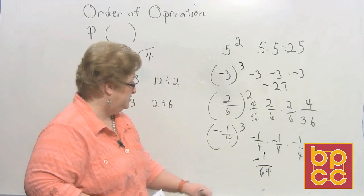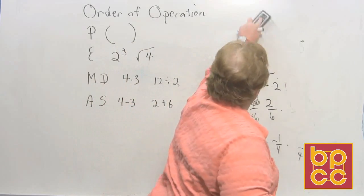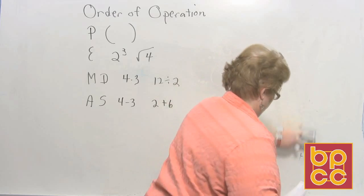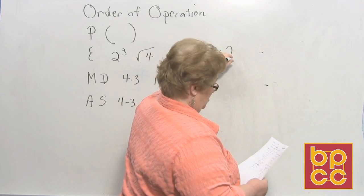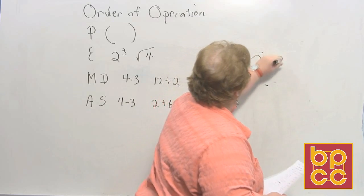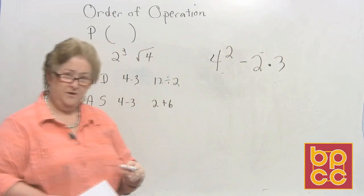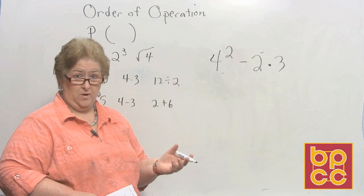All right. Now let's do some order of operation problems. We'll start easy and get a little more difficult each time. Okay. Let's start with this one. Let's do 4 squared minus 2 times 3. Now what needs to be done first? We don't have any parentheses.